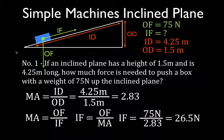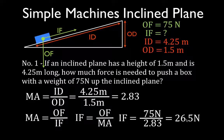So in order to move this object up this ramp, we have to push or pull with a force of 26.5 newtons. That should make sense because the mechanical advantage is approximately 3, and one third of 75 is 25 — this is just about 25. We have to apply a third of the force to get the object up the inclined plane. That is how we calculate the input force.